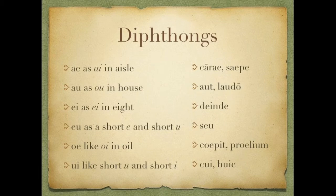The OE diphthong is like the OI in oil — coepit and proelium. And then there's UI, which is like a short U and a short I in rapid succession — cui and huic.